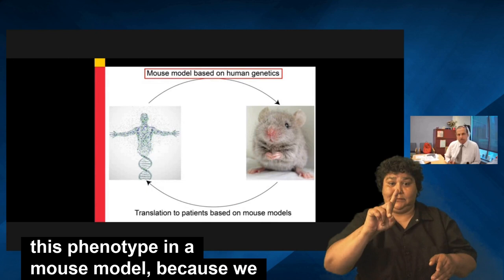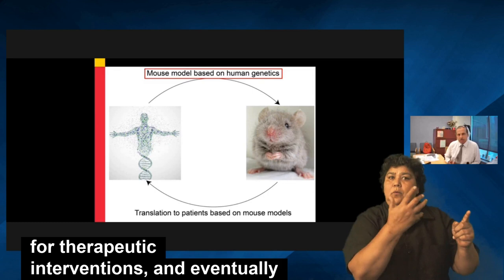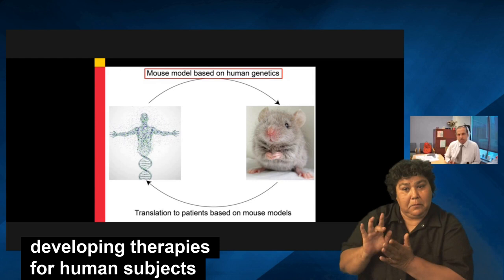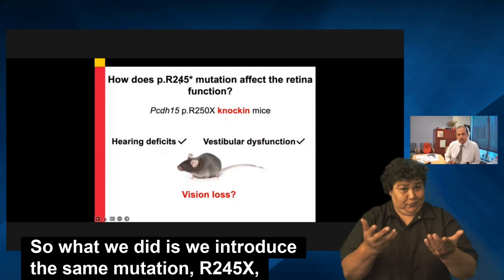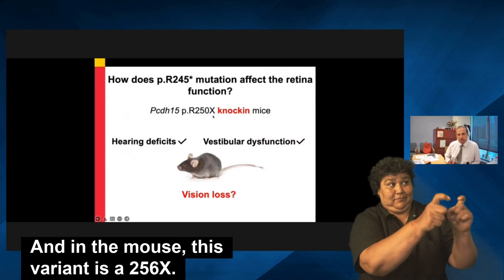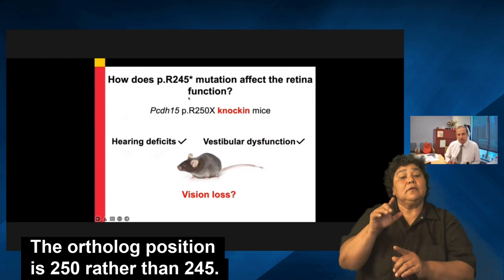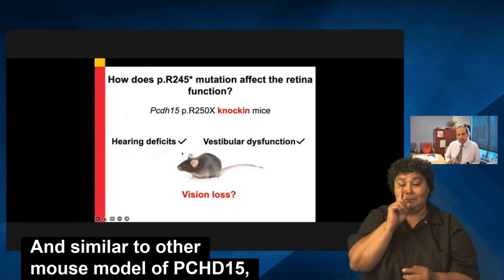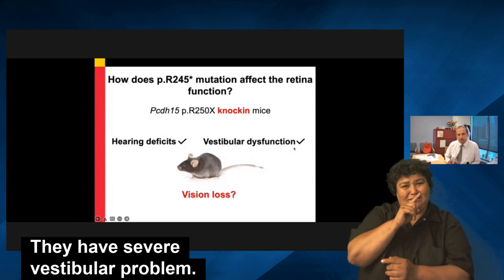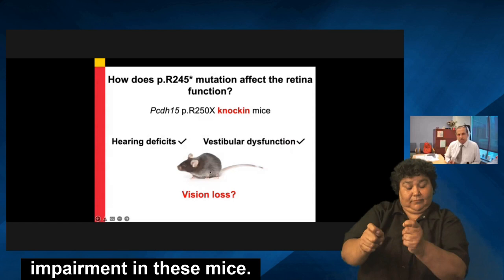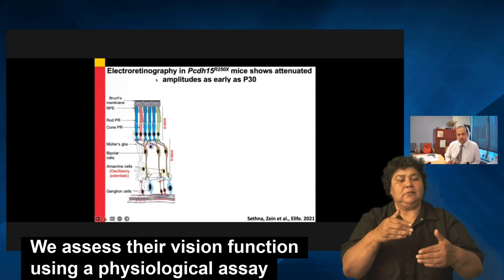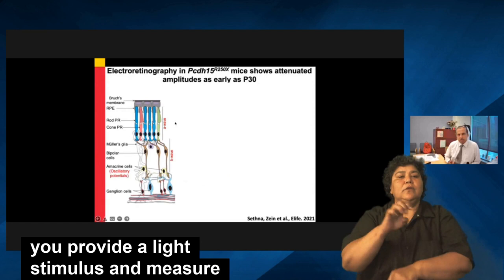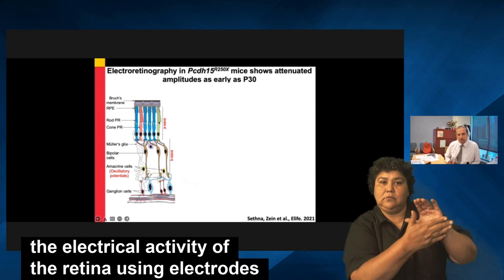We wanted to replicate this phenotype in a mouse model in order to use those animal models for therapeutic interventions and eventually develop therapies for human subjects affected with PCDH15 variants. We introduced the same mutation, R245X, in a mouse model. In the mouse, this variant is R256X, as the orthologous position is 256 rather than 245. Similar to other mouse models of PCDH15, these mice also have a hearing deficit by birth and severe vestibular problems. For the sake of time, I'm going to focus on the visual impairment in these mice, assessed using electroretinography.